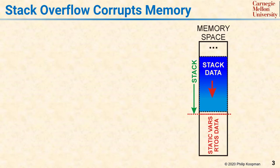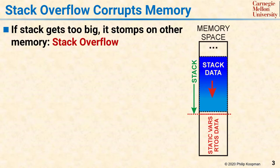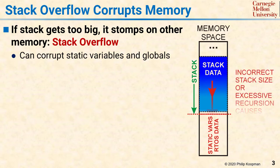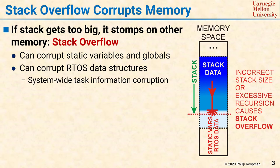Simply put, if the Stack gets too big and exceeds the space allocated for it, it can stomp on other memory. This stomping is likely to hit statically allocated variables and global variables. Depending on your system's memory layout, it can also corrupt real-time operating system data structures, which can do nasty things to your operating system.